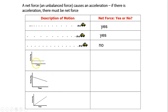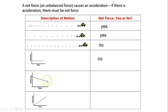Looking at a velocity versus time graph: if velocity is constant, acceleration is zero and there is no net force. In another graph, velocity is changing and getting smaller — remember, slope equals acceleration — slope is not zero, so there is a force. Similarly, in a third graph, slope is not zero, so there is a force.